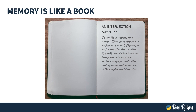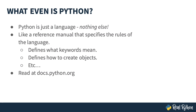Now let's take a look at how your Python programs are actually run. Python is not that special — really, it's not. At its core, it's just a language, and nothing else. We often think of Python as a program that we can install and use to run Python code, but that's not 100% accurate. Python is just like a reference manual that specifies all the rules of the language. Just like the English language states that every sentence should end with a period, Python states that blocks of code should be denoted by indentation, and keywords like if, while, and for can be used to control the flow of execution. You can read the entire Python language specification at docs.python.org.